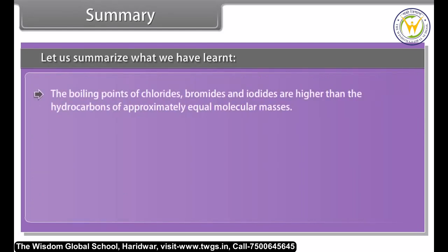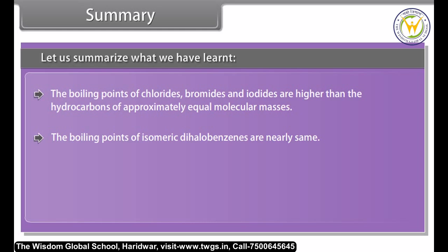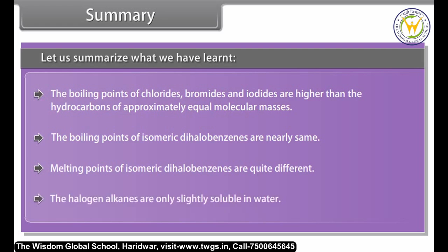The boiling points of chlorides, bromides, and iodides are higher than those of hydrocarbons of approximately equal molecular mass. The boiling points of isomeric dihalobenzenes are nearly the same, but their melting points are quite different. Haloalkanes are only slightly soluble in water.